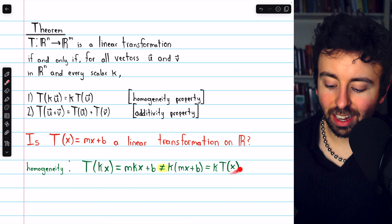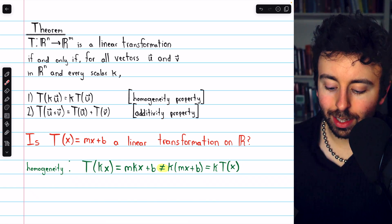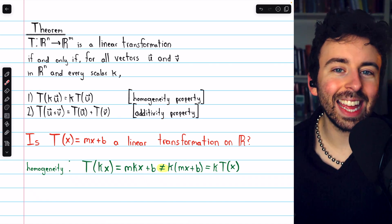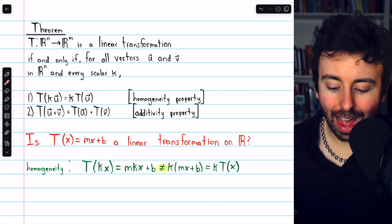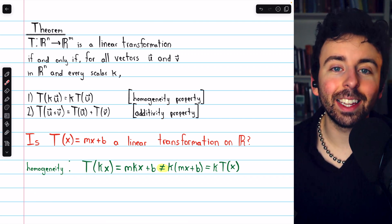if we transform x first, what we get is mx plus b. And then if we multiply that after the fact, clearly that's not equal to what happens when we plug in kx. So a linear equation does not have the homogeneity property, so certainly it's not a linear transformation.